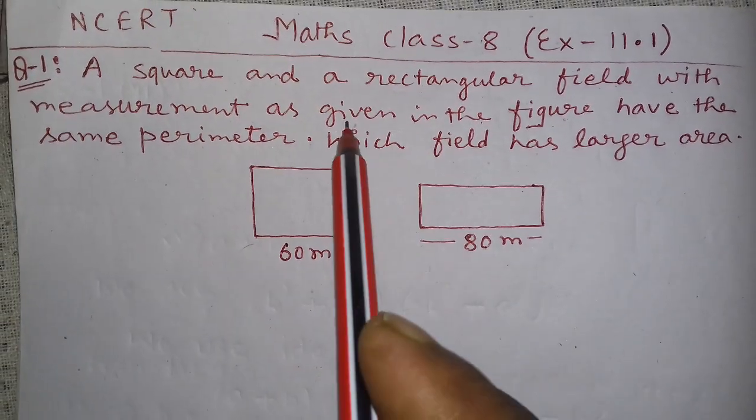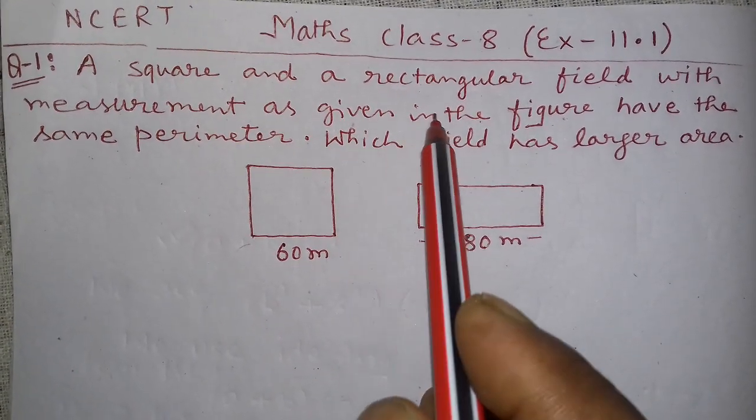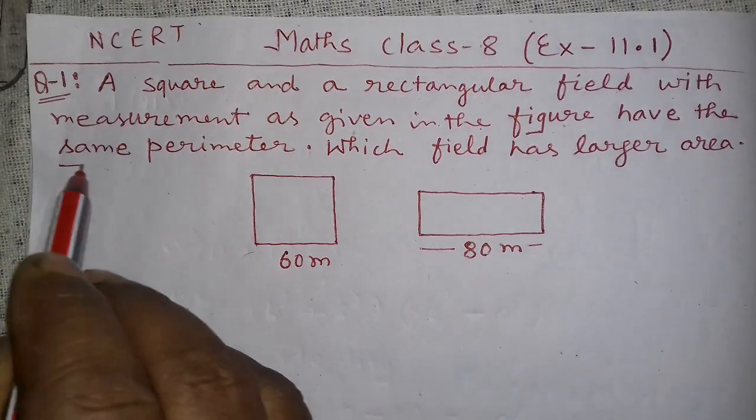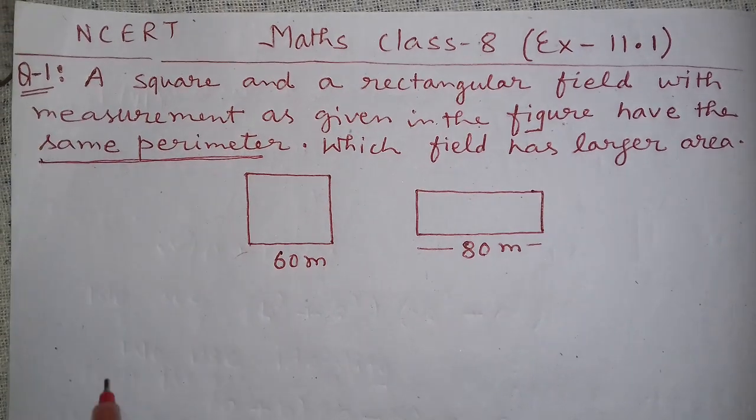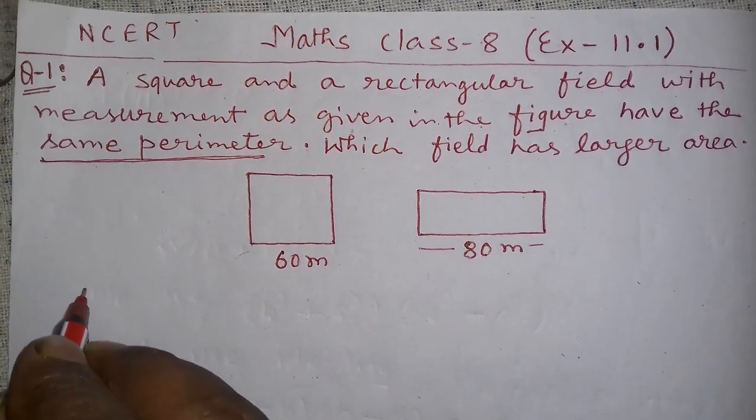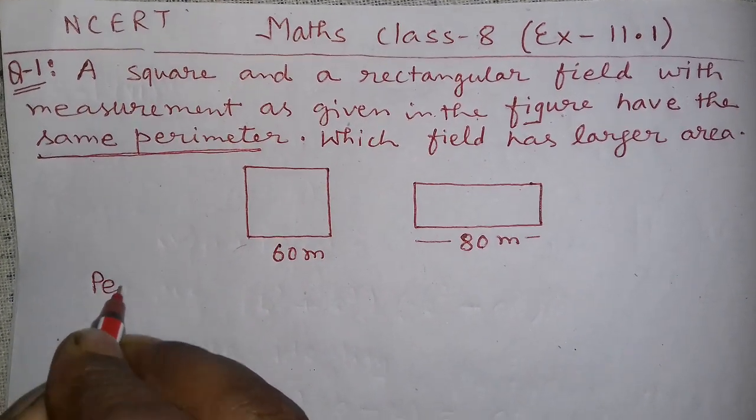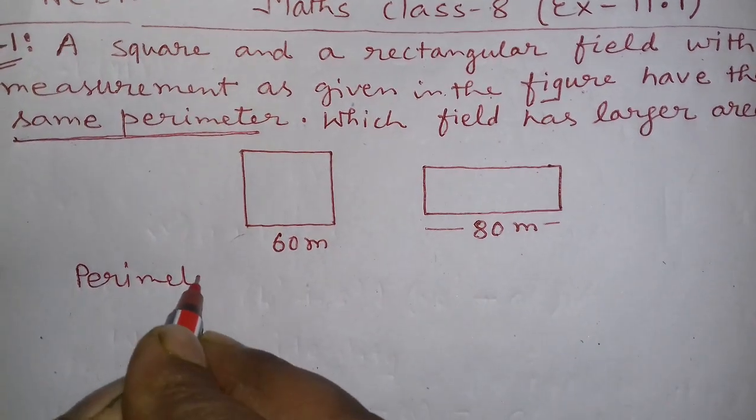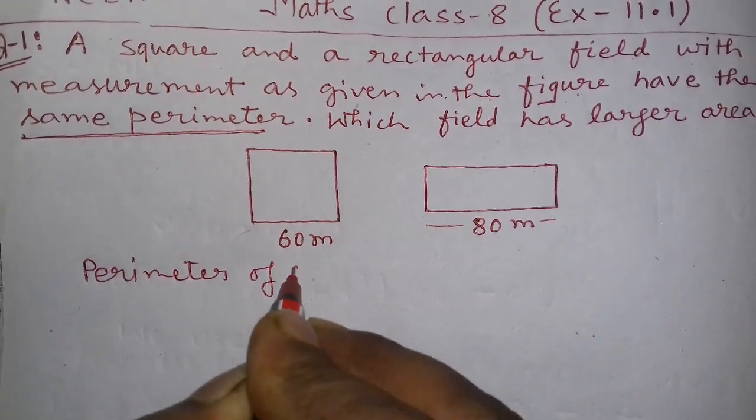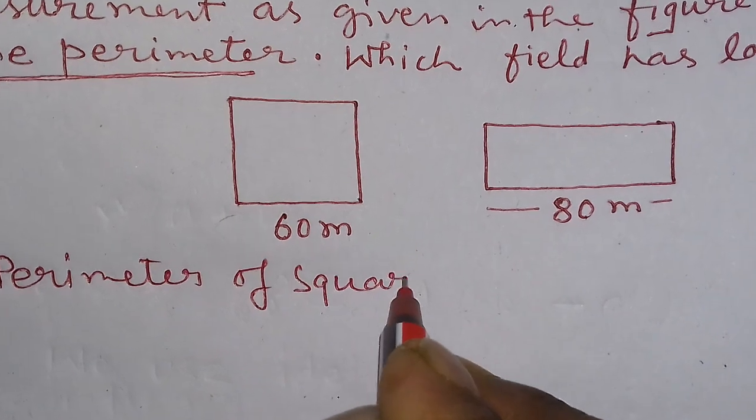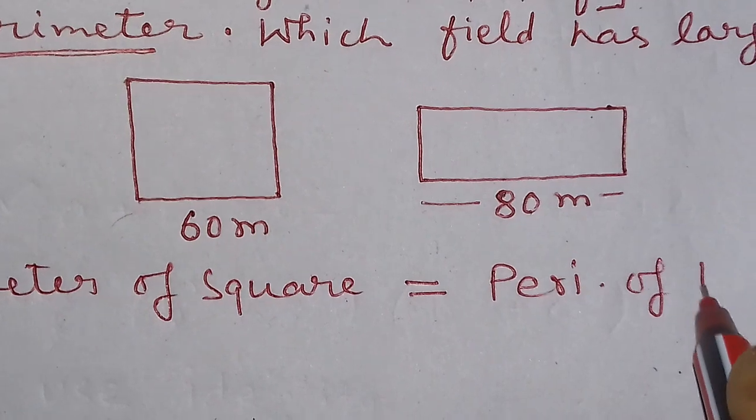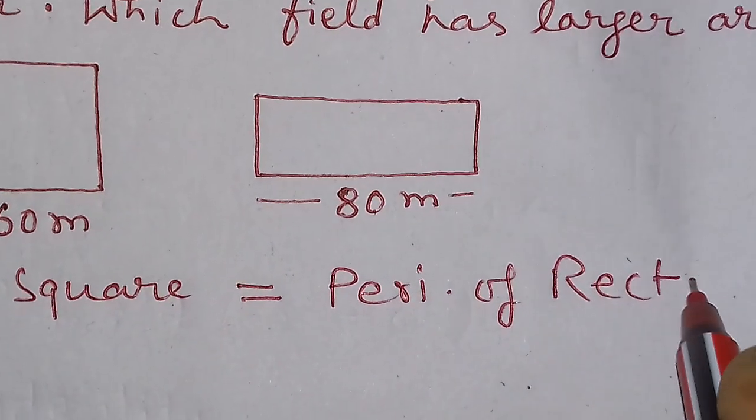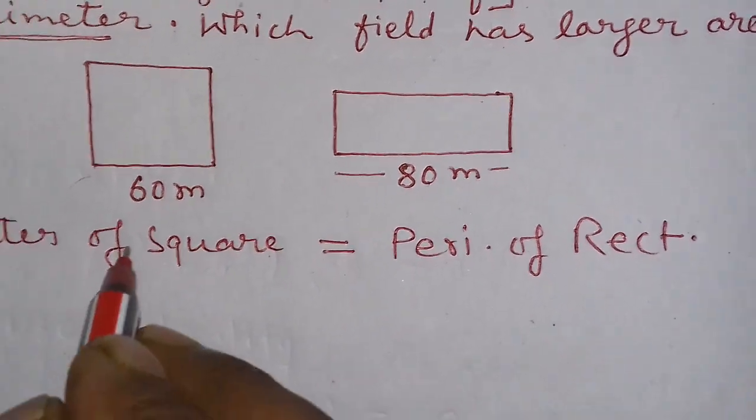Again you see in your question, given in the figure have the same perimeter, mind it, here is given same perimeter. So first step is perimeter of square equal to perimeter of rectangle.